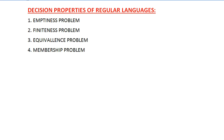Before starting with the decision properties, we will be discussing a topic known as 'problem.' This problem topic we will also discuss in unit number five after completion of Turing machine. The decision properties depend on certain parameters, and we consider those parameters as one kind of problem. To understand these properties, you should first know about problems.